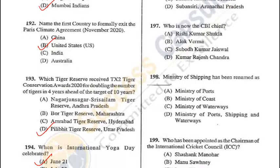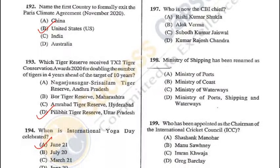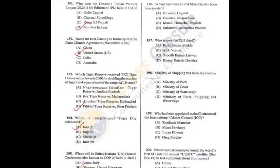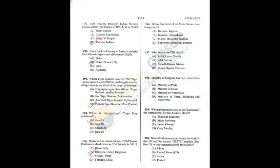Question 198: Ministry of Shipping has been renamed as Ministry of Ports, Shipping, and Waterways — D is the answer. Q196 = B, Q197 = C, Q198 = D.